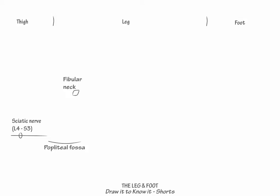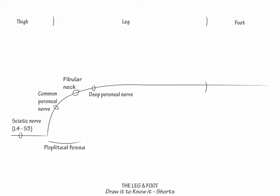Show that the common perineal nerve leaves the sciatic nerve, wraps around the fibular neck, and then divides into the deep perineal nerve, which innervates the muscles of the anterior leg and dorsum of the foot, and the superficial perineal nerve, which innervates the muscles of the lateral leg.